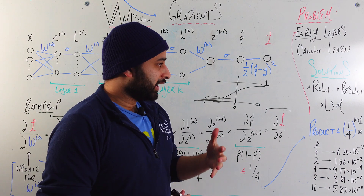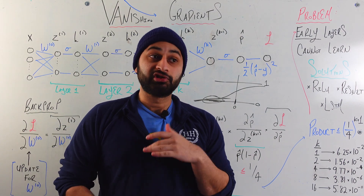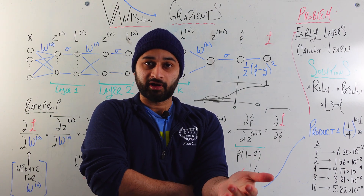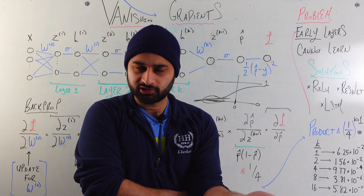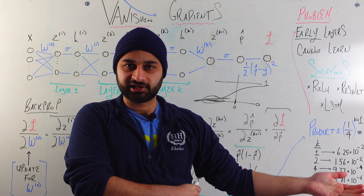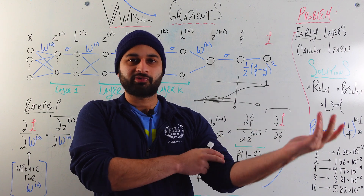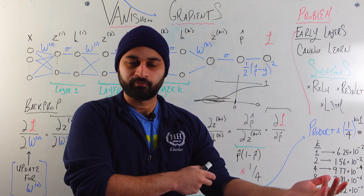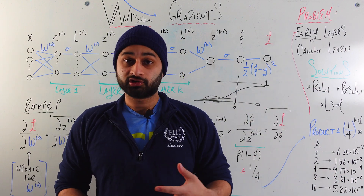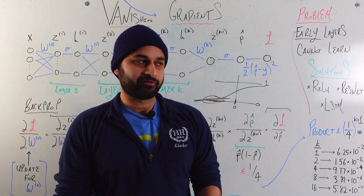Now let's close out the video by talking at a high level about some solutions people have come up with to deal with the vanishing gradient problem. Of course there are solutions — we use neural networks everywhere these days. I'll talk about three families of solutions and their pros and cons briefly.